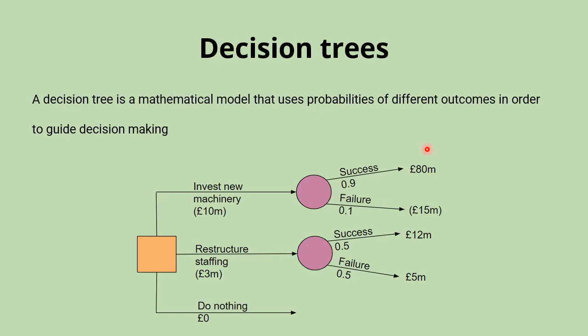This decision tree is showing us that we have the option to invest in new machinery, which costs us ten million pounds. This has a 90 percent chance of success, and if it's successful, that would offer us a return of 80 million pounds. But it also has a 10 percent chance of failure, in which case that would offer us a loss of 15 million pounds.